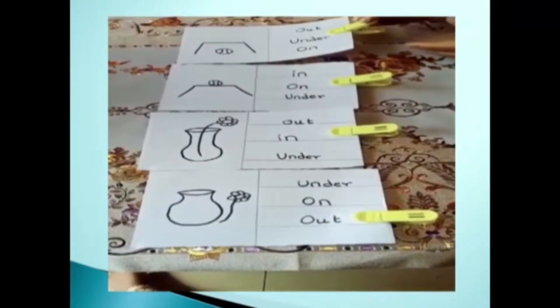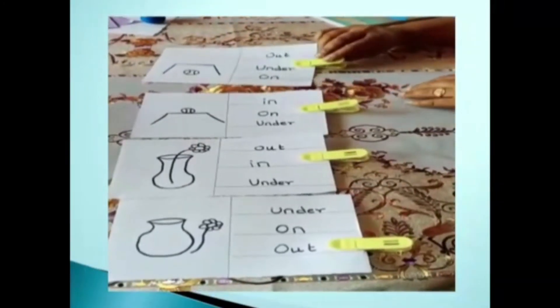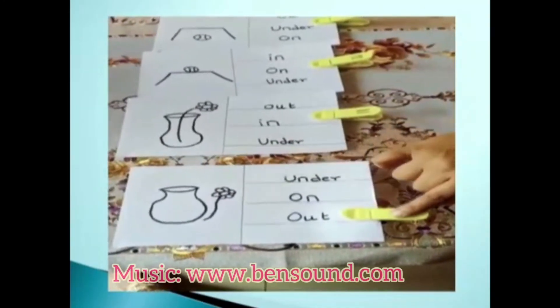This is the third activity. The child places the cloth clip on the answer. Here it is under, here it is on, here it is in, and here it is out.